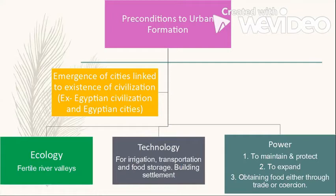Production of food is linked with civilization, which is linked to cities. Most civilizations have developed cities within them. As an example, the Egyptian civilization and its various Egyptian cities illustrate this connection — most civilizations developed cities.